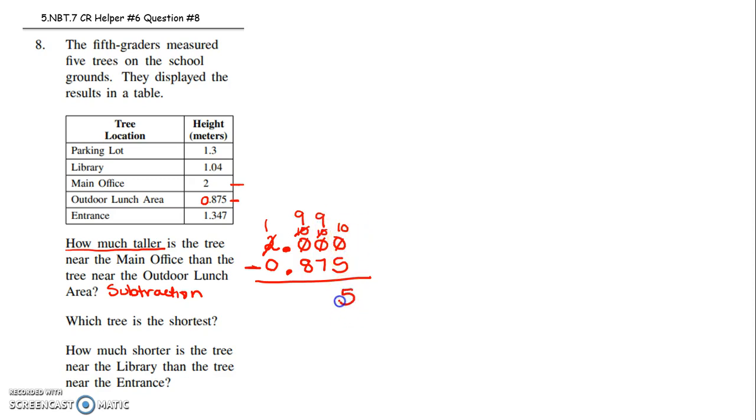10 minus 5 is 5, 9 minus 7 is 2, 9 minus 8 is 1. I keep my decimal point. 1 minus 0 is 1. So that tree near the main office is 1 and 125 thousandths of a meter taller than the one near the outdoor lunch area.